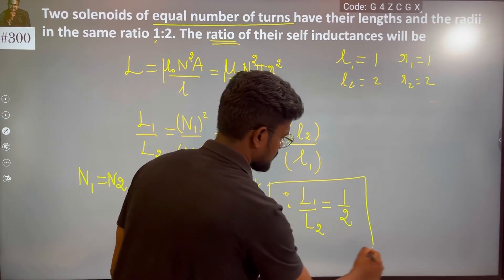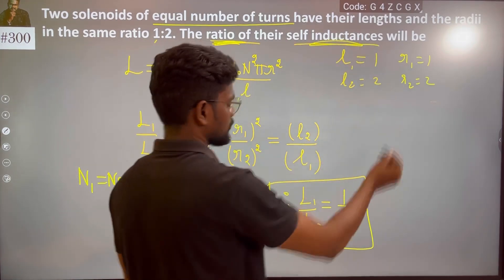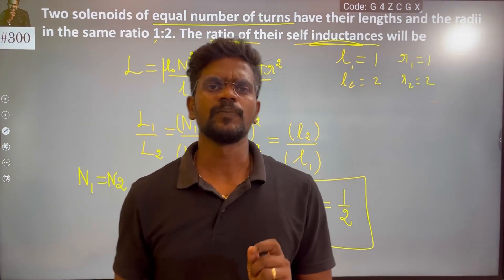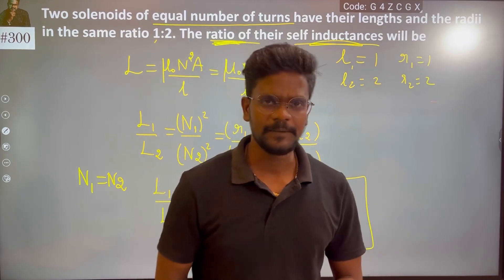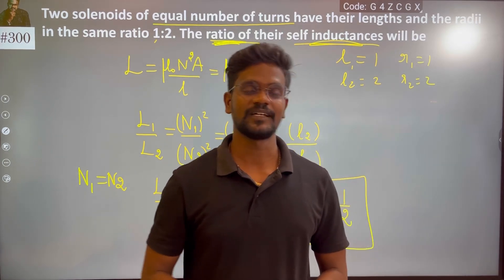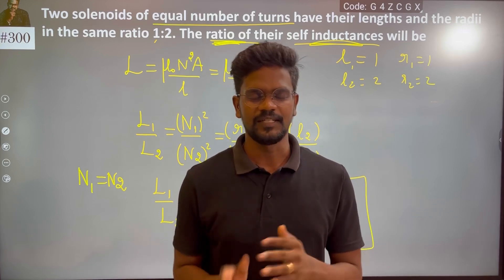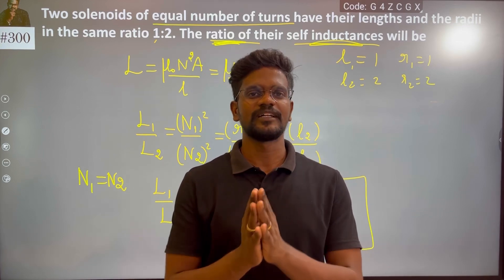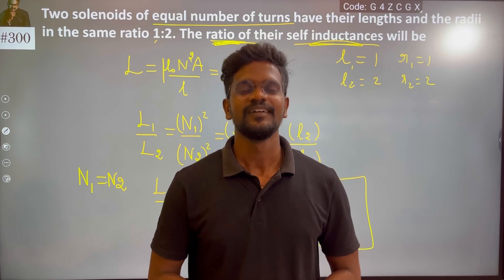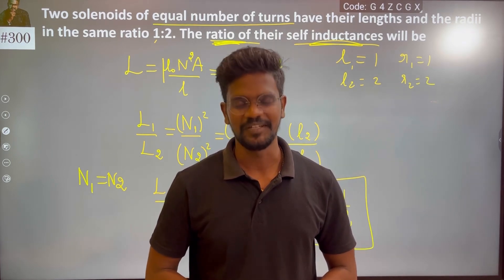That is the self-inductance ratio. So 1 by 2 is your final answer. If you have any doubts, comment below. The channel has conceptual videos, refer to them and understand the concept well. Thank you.